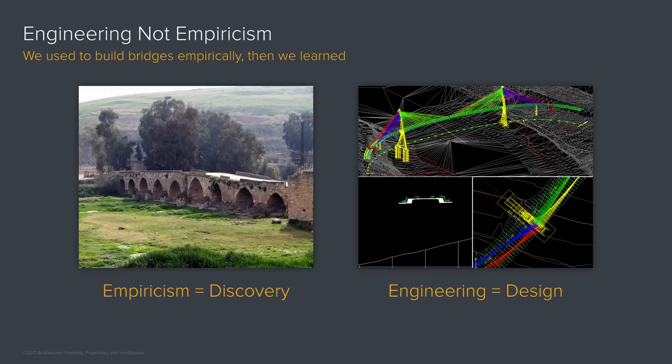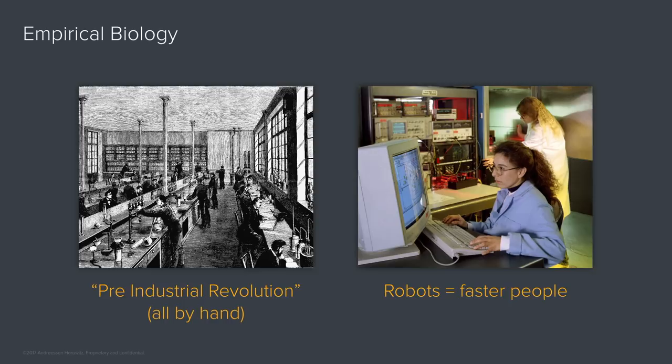You might wonder, aren't we doing that already? Biology has come a long way, but if you go to the top labs at Stanford, Harvard, MIT, or UCSF, a lot of science has not changed. It's brilliant people at benches doing manual labor — pipetting — almost like pre-industrial revolution. The big advance was robots, but robots is just faster people. You can get to your 1,000 or 10,000 chances just faster. What we want is something different — something where you don't make 10,000; you make one, two, or three, and that works.